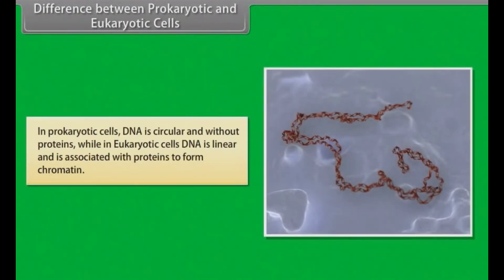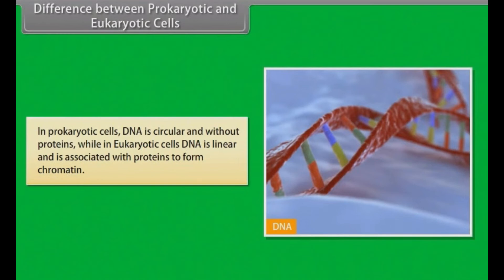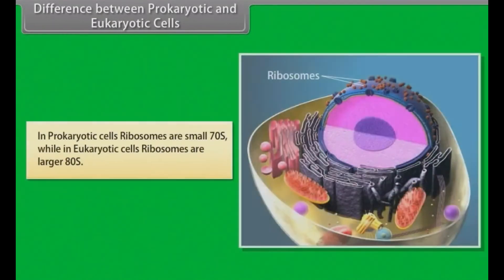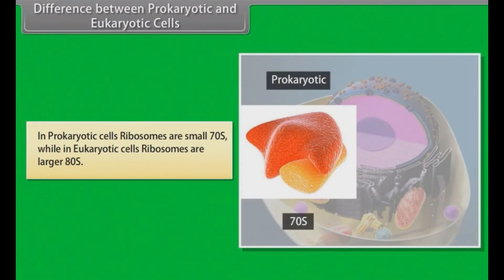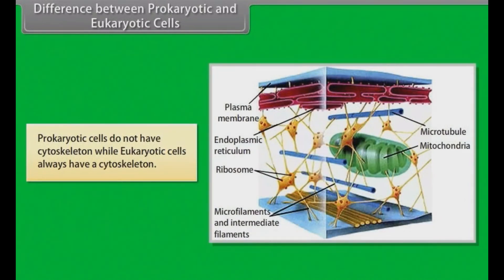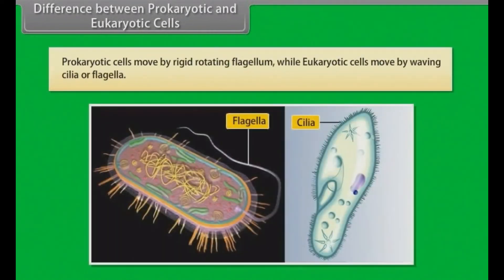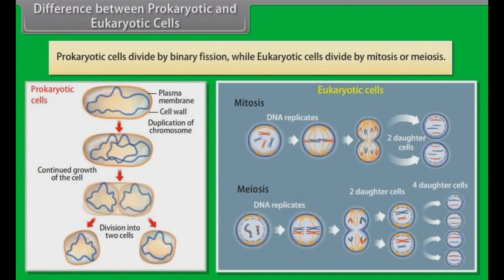In prokaryotic cells, DNA is circular and without proteins, while in eukaryotic cells, DNA is linear and associated with proteins to form chromatin. In prokaryotic cells, ribosomes are small 70S, while in eukaryotic cells, ribosomes are larger 80S. Prokaryotic cells do not have a cytoskeleton, while eukaryotic cells always have one. Prokaryotic cells move by a rigid rotating flagellum, while eukaryotic cells move by waving cilia or flagella. Prokaryotic cells divide by binary fission, while eukaryotic cells divide by mitosis or meiosis.